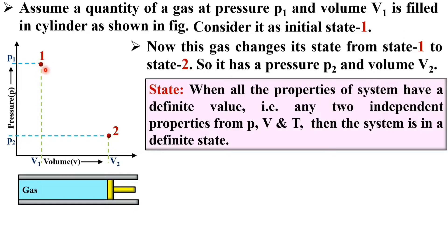Let's take the example of state 1. State 1 is defined by two properties of pressure and volume. Similarly, for state 2, there are two independent properties, pressure P2 and volume V2. State 1 and state 2 both are defined by the independent properties of pressure and volume.